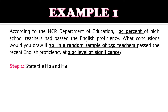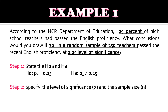For step one, we state our null and alternative hypothesis. Null hypothesis: population proportion equals 0.25. Alternative hypothesis: population proportion is not equal to 0.25. For step two, we identify the level of significance and sample size. The sample proportion P-hat equals 70 out of 250, which gives 0.28. Alpha equals 0.05 and sample size N equals 250.